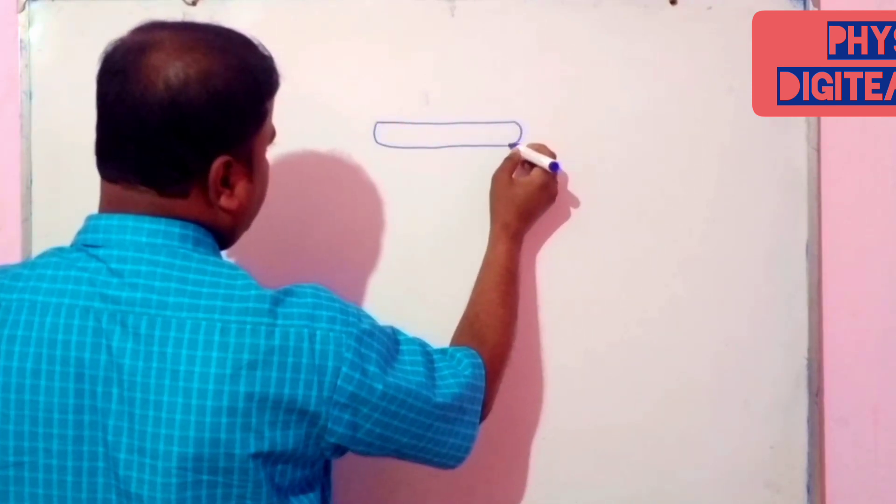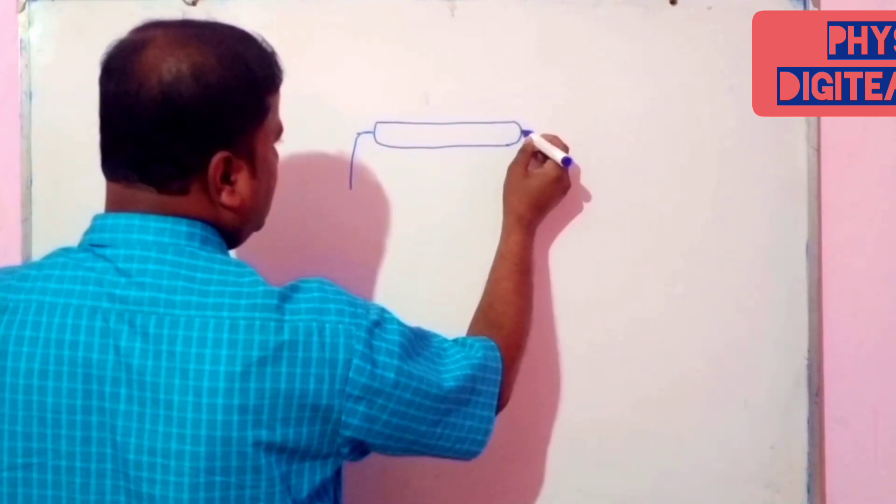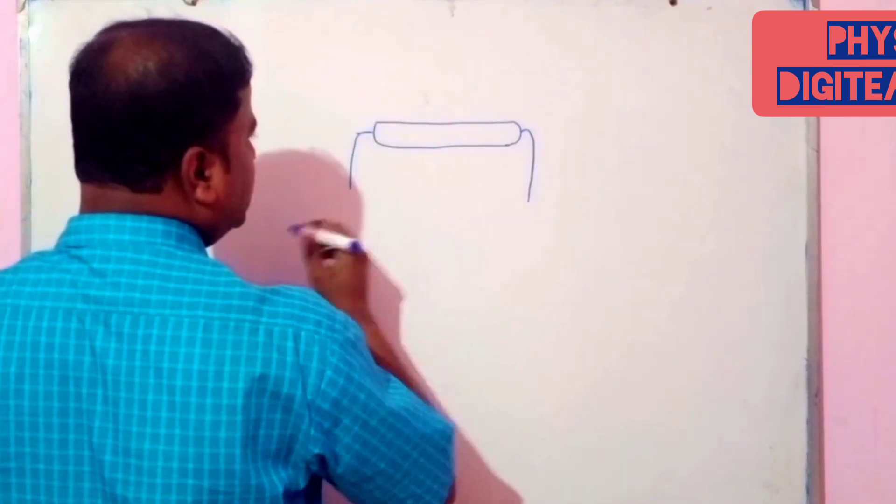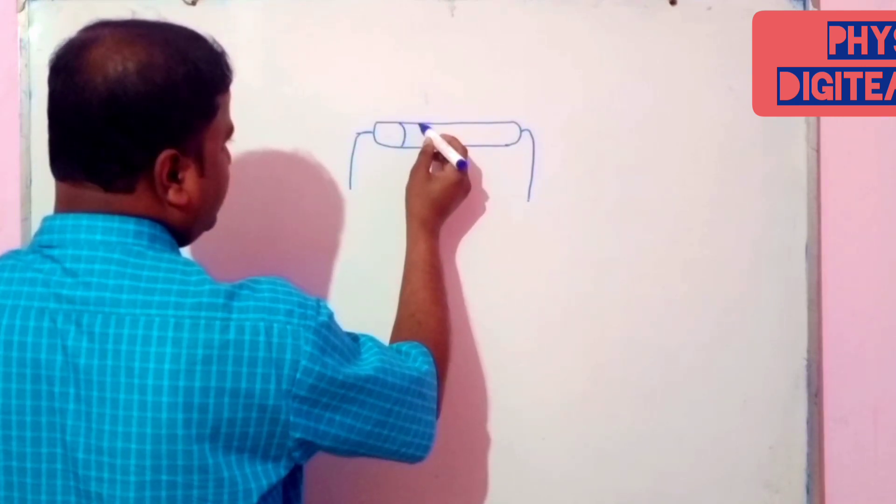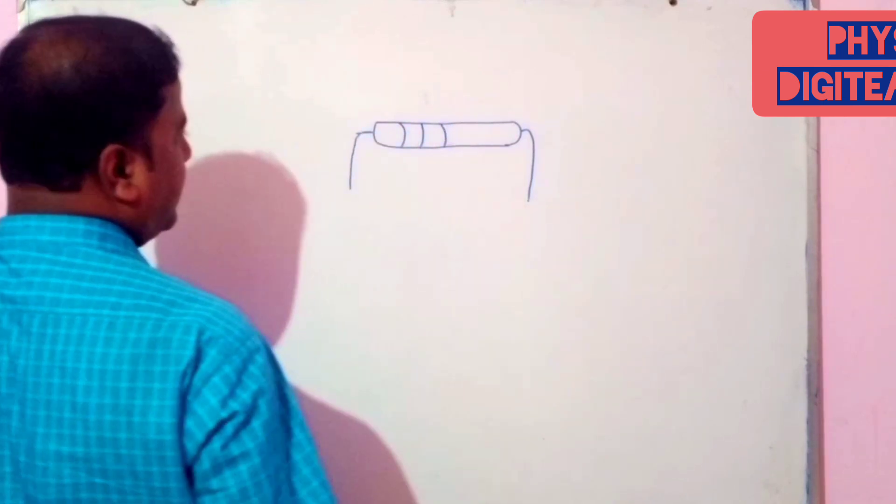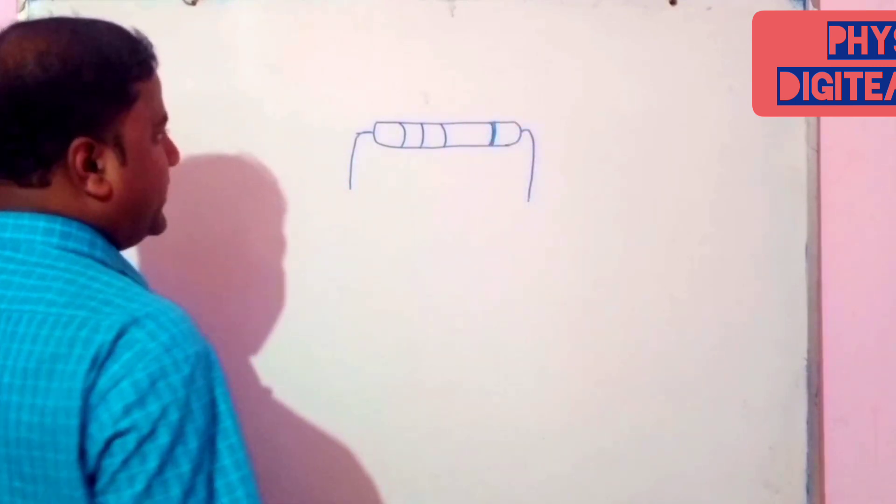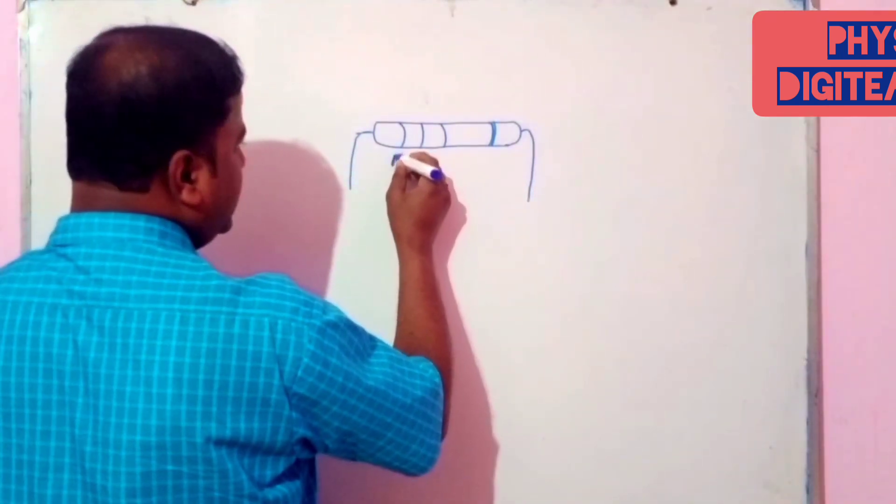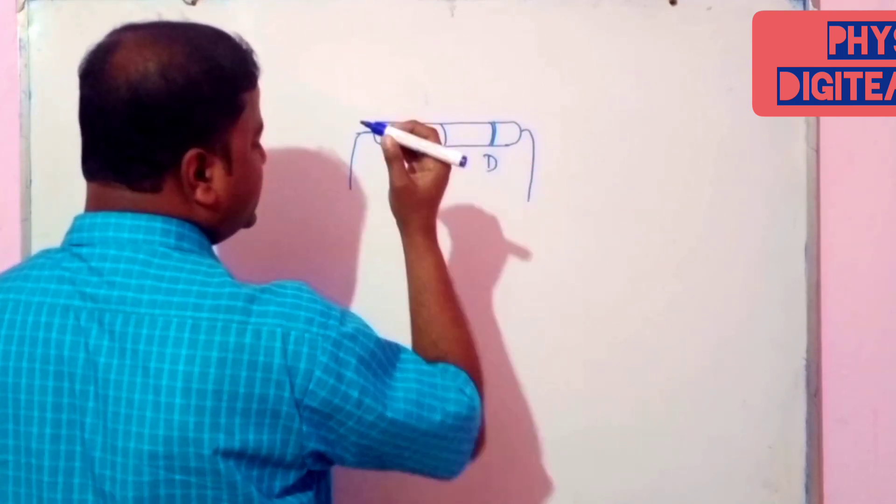See, here it is a carbon resistor. It has two metal legs and on the resistor, there are four coloring bands. And this is fourth band.